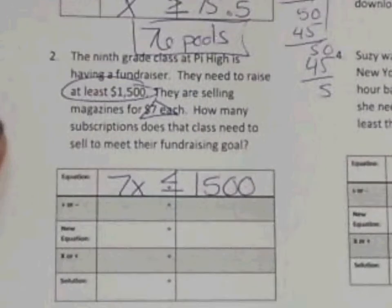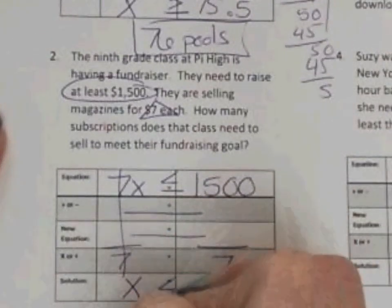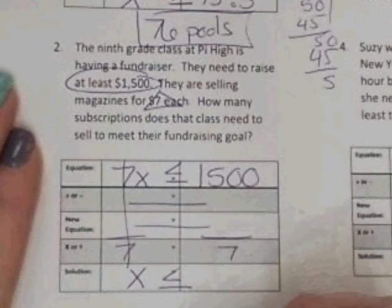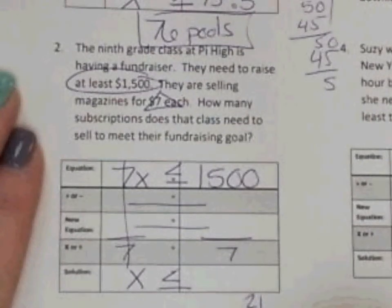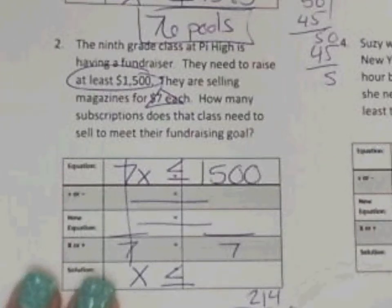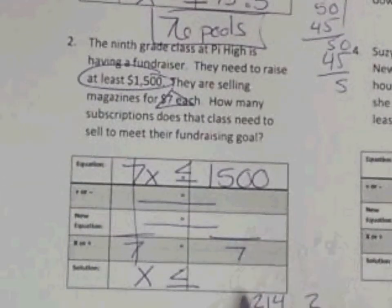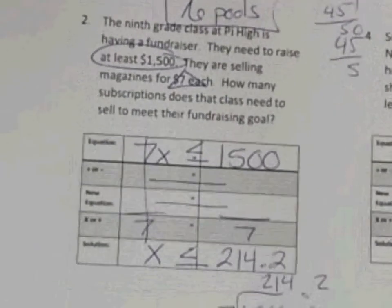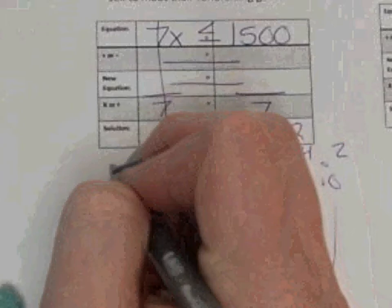We're going to write it as 7x is greater than or equal to $1,500. We're going to skip the add/subtract step because we don't need it, and divide each side by 7 — that will cancel out the 7. So x is less than or equal to — let me fix myself before I confuse y'all — that is a less than or equal to sign. I'm going to do 1,500 divided by 7. We have done enough to know that x is less than or equal to 214.2.